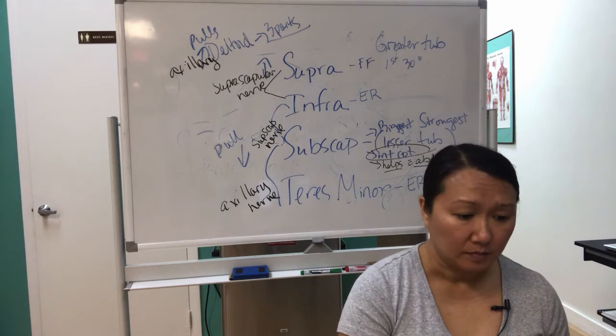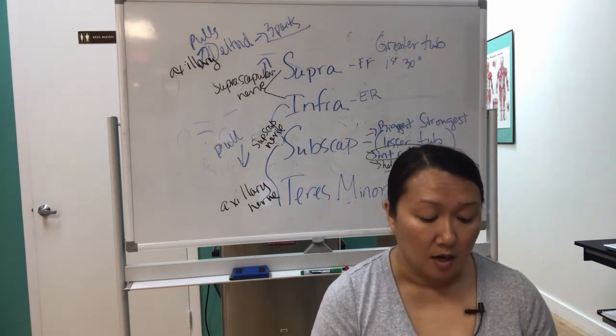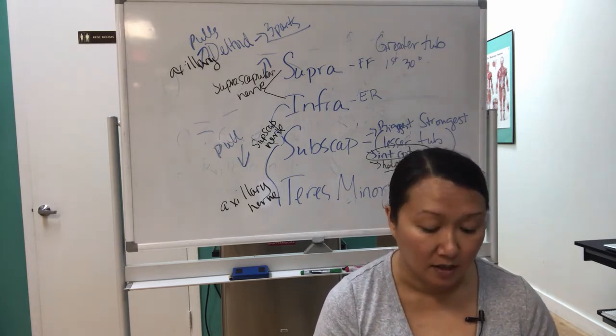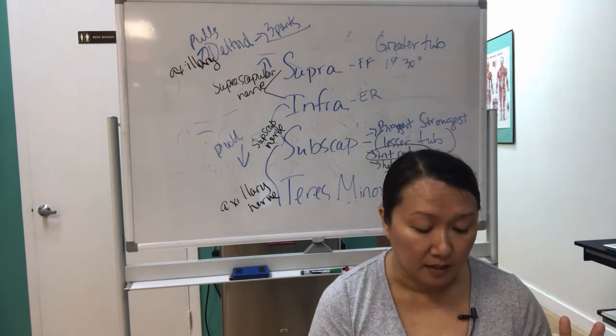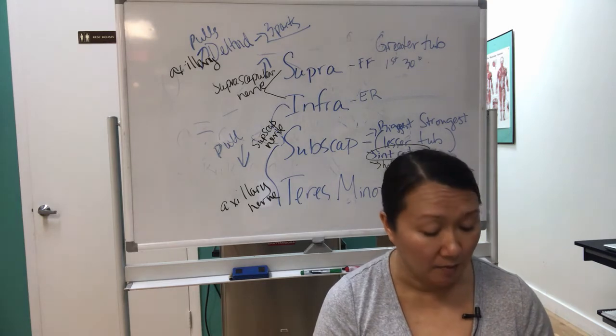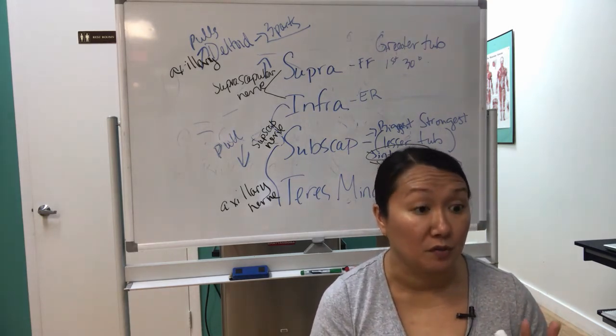So in the videos, I go over the impingement signs. So when it's a rotator cuff, you're going to look for impingement signs, and there's two different types of tests, and then you can do the Job's test or the empty can. That's looking for impingements or you're looking for tears.